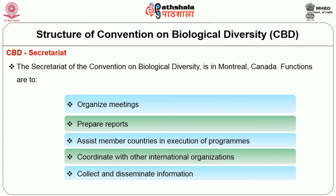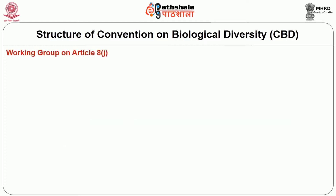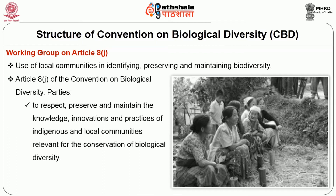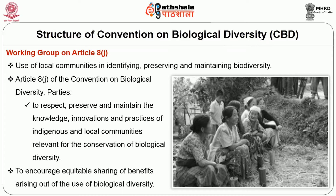Another important element is the Working Group and Article 8J. It involves the use of local communities in identifying, preserving and maintaining biodiversity, because local people know more about biodiversity. Article 8J of the Convention on Biological Diversity says that parties should respect, preserve and maintain the knowledge, innovations and practices of indigenous and local communities relevant for the conservation of biological diversity, and to encourage equitable sharing of benefits arising out of the use of biological diversity.